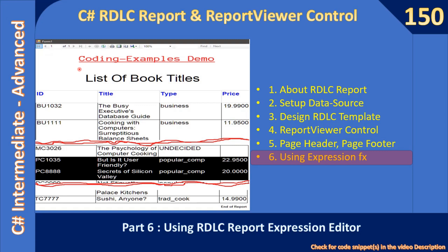Hello friends, welcome to the C# intermediate to advanced tutorial. In this sub-series you are watching RDLC report and report viewer control. We are at the final part of the sub-series, and in this video we will see how to use expressions to highlight costly books — that means we will highlight books which have a price of $20 or above.